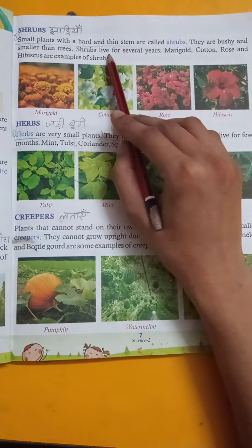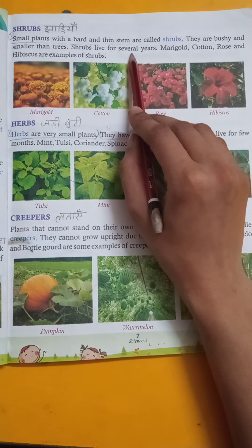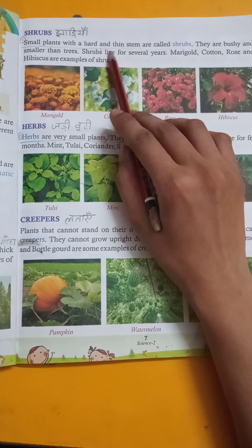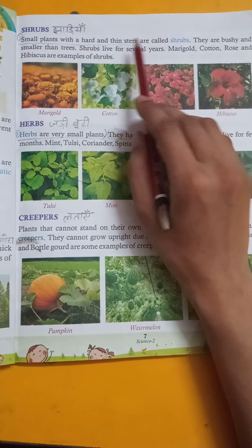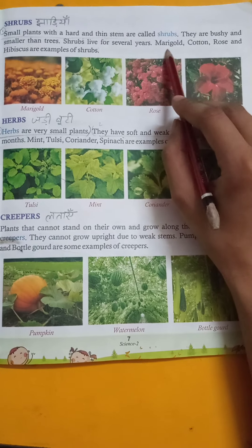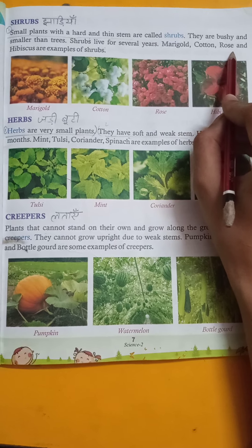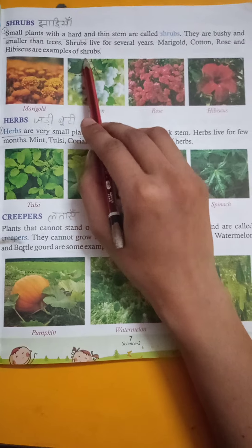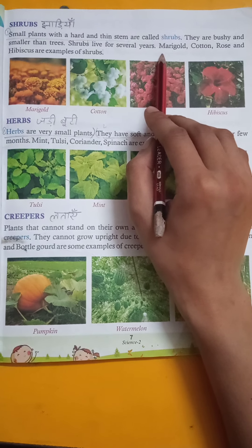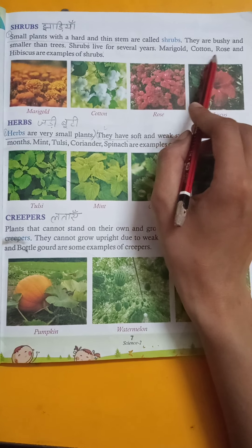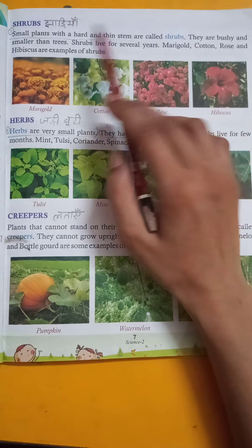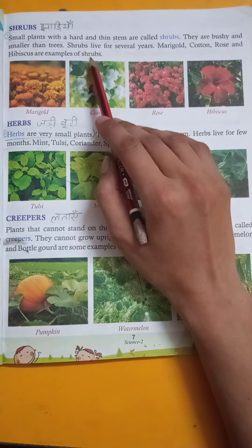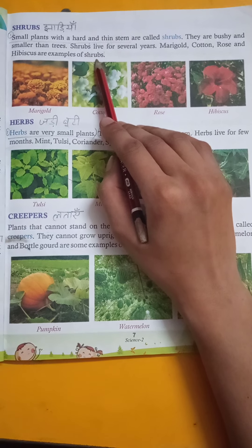Shrubs live for several years. Marigold, cotton, rose, and hibiscus are examples of shrubs.